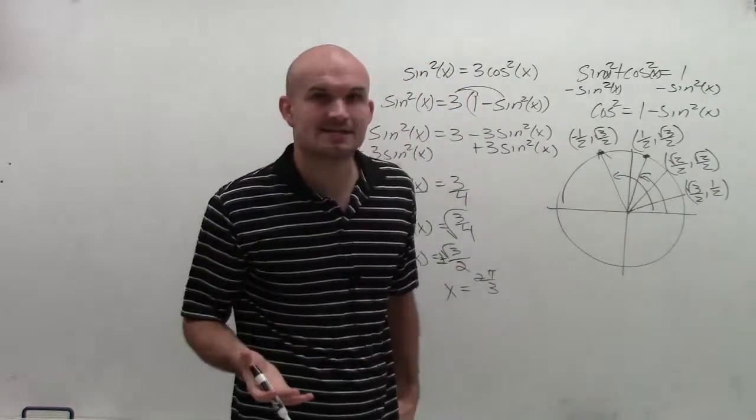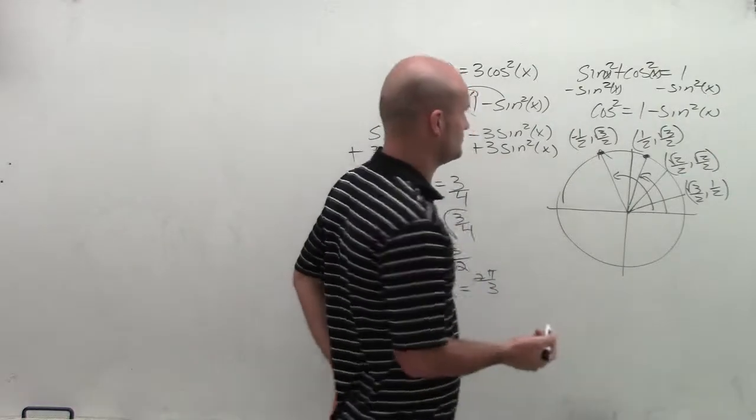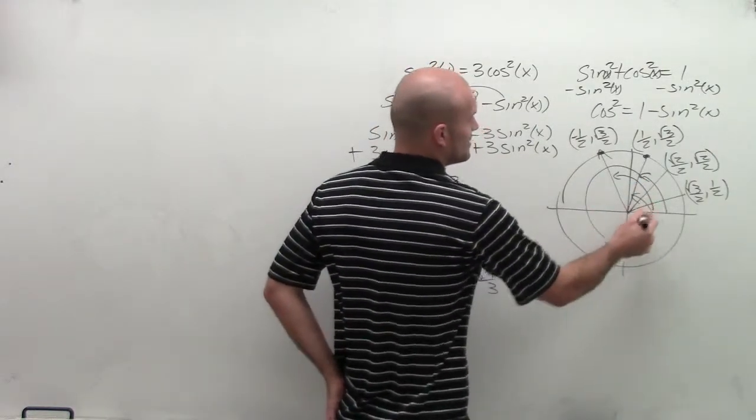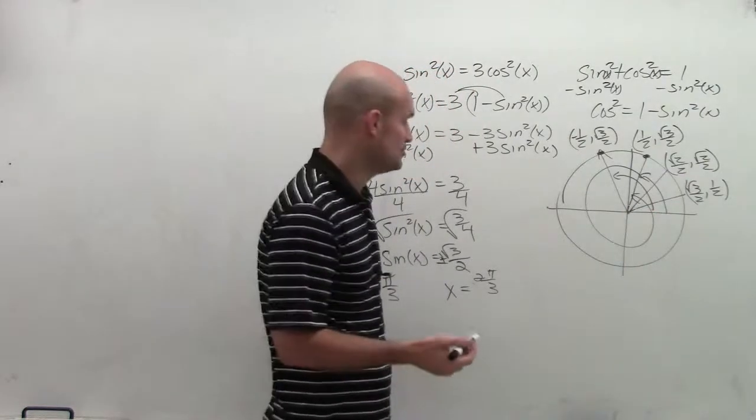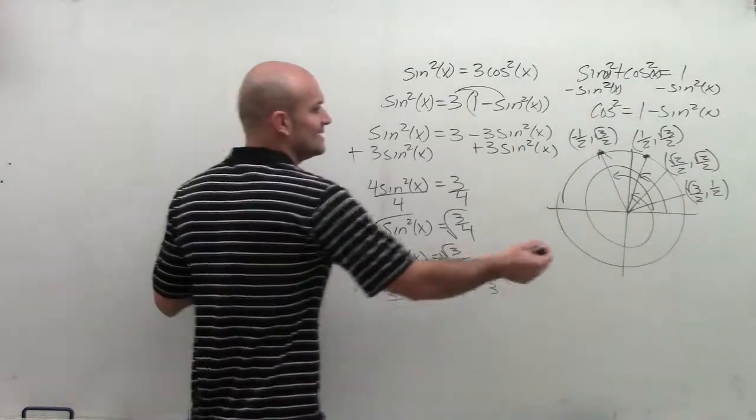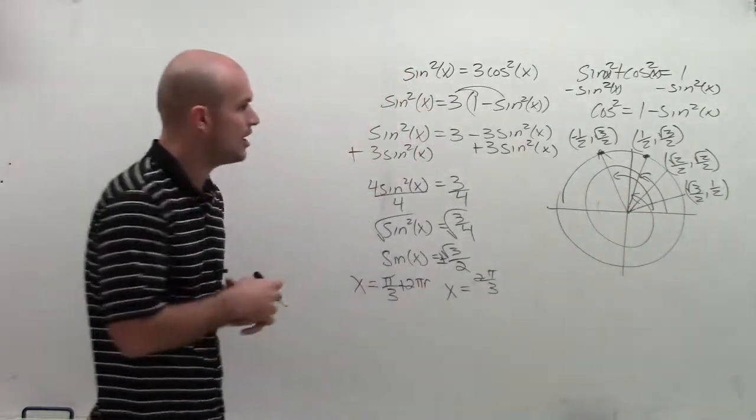So if I added 2 pi to this angle, I'm still going to have the exact same solution. So therefore, for pi thirds, I can add 2 pi. And I can continue doing this infinitely many times. So I'm going to multiply 2 pi times n.